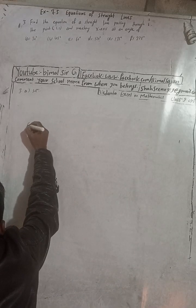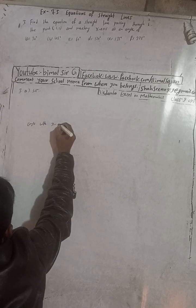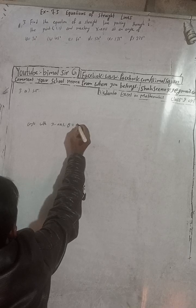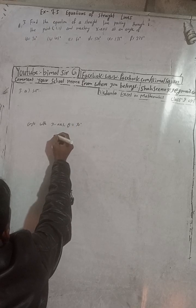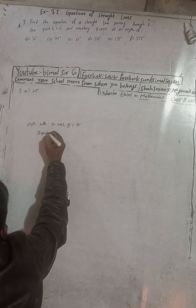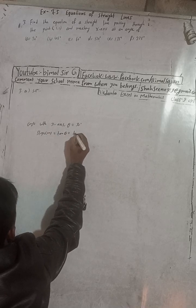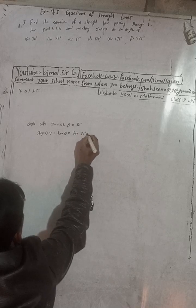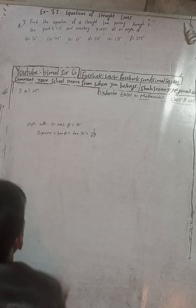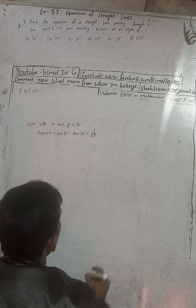For part (a), the angle with the x-axis is taken in the positive direction, so theta equals 30 degrees. When the angle with the x-axis is theta, the slope m is given by m equals tan theta. So tan 30 degrees equals 1 by root 3.